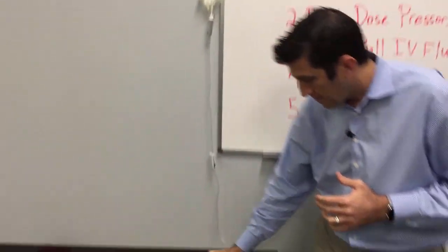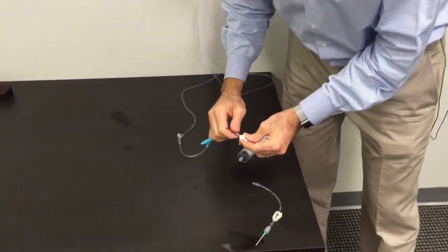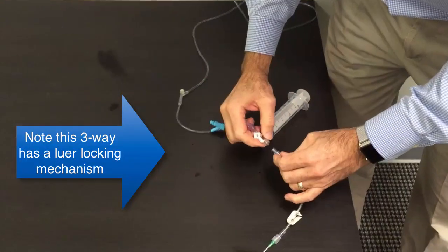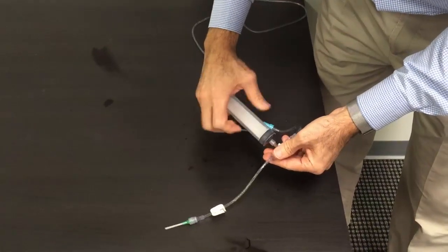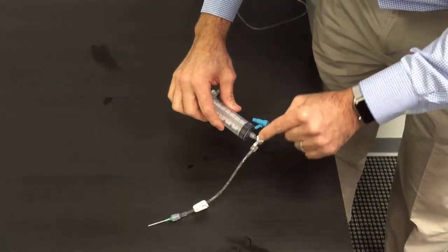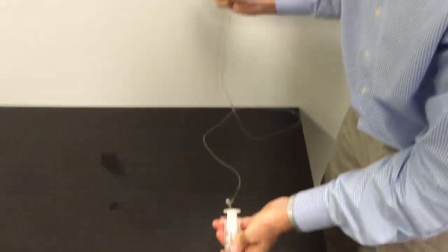First we have our IV bag, our IV tubing, and here's our three-way stopcock. So we're going to go ahead and attach it to here, we're going to attach this to the patient, and then we're going to attach our 60 cc luer lock syringe, and now we're going to be off to the patient. You can see here by opening up the IV bag, we can pull right into the 60 cc syringe.